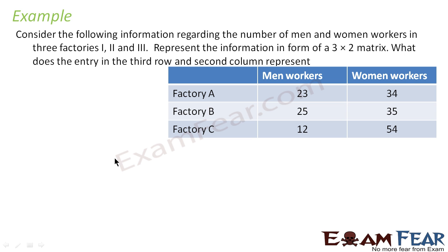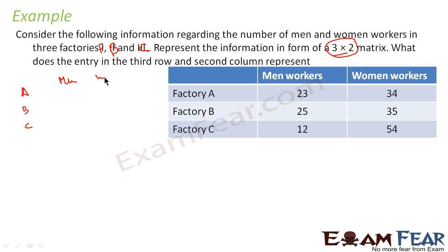Let's take one more example. We have information regarding the number of men and women workers in three different factories — factory A, B, and C. We have to represent this data in the form of a 3×2 matrix. For factory A it is 23 men and 34 women; for factory B it is 25 men and 35 women; for factory C it is 12 men and 15 women.